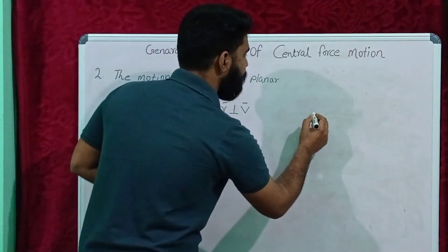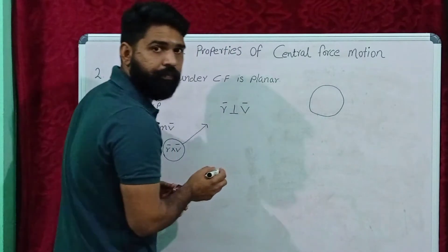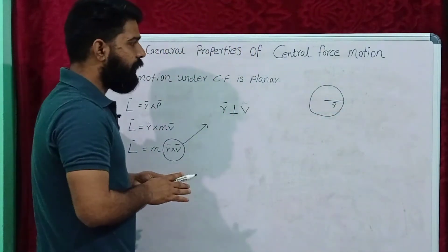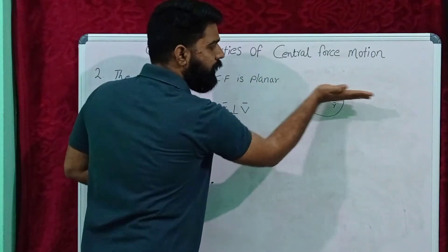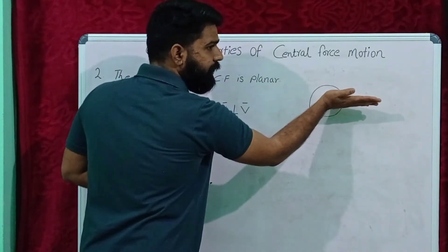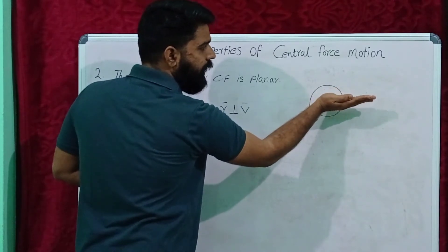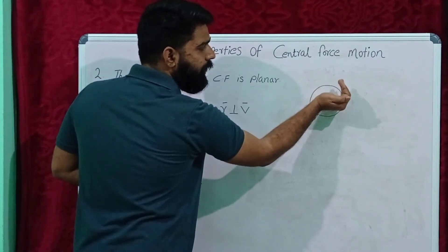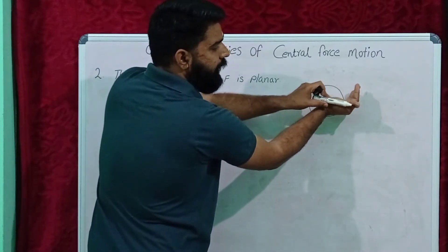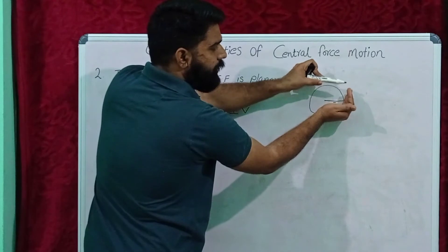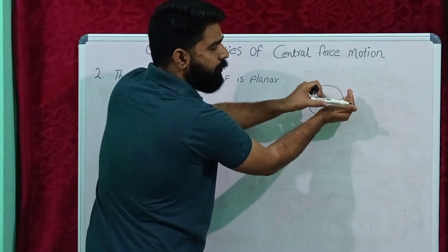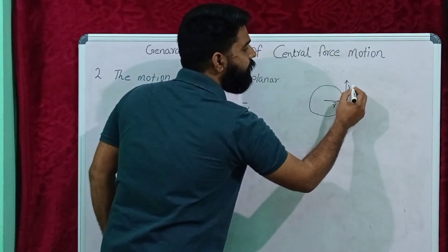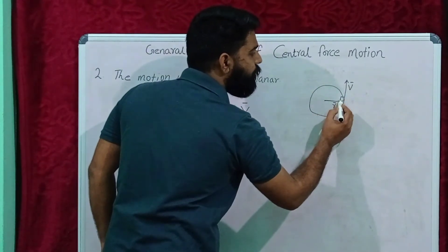Please see here. Suppose we consider this is vector R — this is the direction of vector R. Then we can find out the direction of velocity. When we fold the four fingers perpendicular to the direction of R, this direction represents the direction of velocity and this represents the position vector direction. That means R is perpendicular to V.